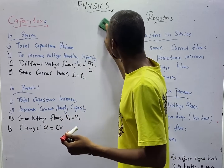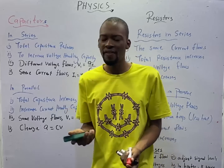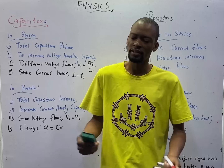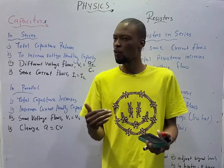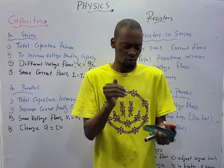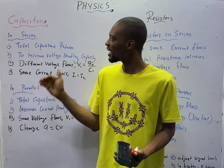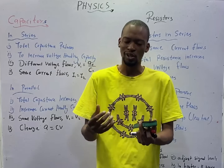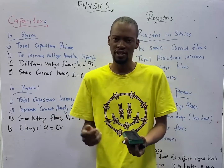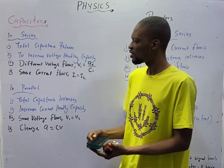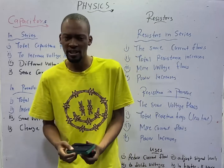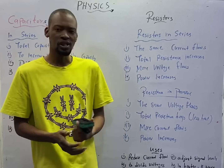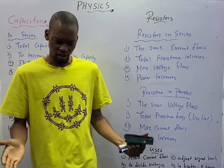In circuits, you can either need one capacitor or resistor, or you need more than one. Most times, one is not enough. You definitely need more than one element to store charges and more than one element to oppose the flow of current. What are the reasons we need more than one capacitor or many capacitors? What are the reasons we need more than one resistor or many resistors?